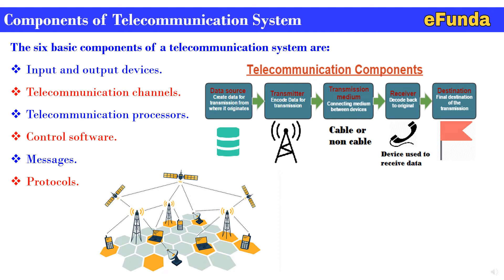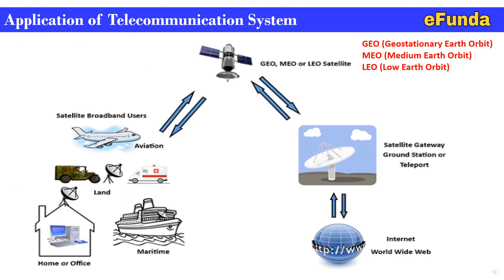We will see further details of telecommunication systems through their medium in our next series of videos. We have covered introduction to telecommunication system, telecommunication system, and components of the telecommunication system. Now we are briefly covering the application of a telecommunication system, where the interface goes from home or office to land, then via satellite to aviation, and finally to a satellite gateway ground station or tele-support for two-way communication, enabling worldwide internet data exchange.